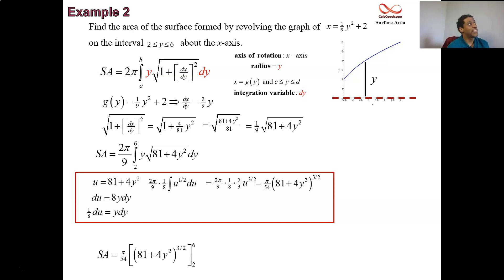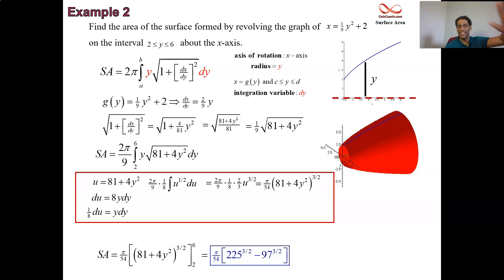You put a 6 in there, 6 squared is 36, 36 times 4 plus an 81. It actually ends up as a perfect square, 225. When you put a 2 in there, it doesn't end up as a perfect square. 2 squared is 4. 4 times 4 is 16. 16 and 81. You get 97. Better off just leaving it just like that. 225 to the 3 halves minus 97 to the 3 halves. Put the pi over 54 on the outside. What we just calculated was the area it takes to paint the solid surface area.